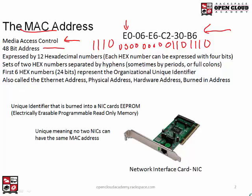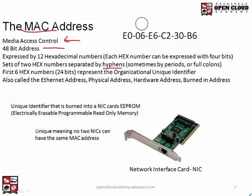Sets of two hex numbers are separated by hyphens. This format — the one you see here on the screen — is the correct format. I've seen some documentation using periods and even full colons, which you can do, but the correct way to express a MAC address is with hyphens. If you do an ipconfig /all on your computer, it's going to be expressed with the hyphens.